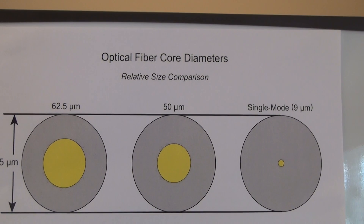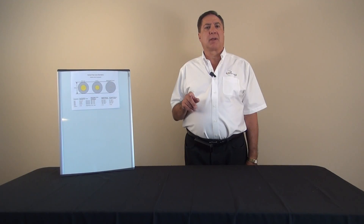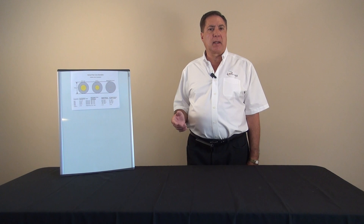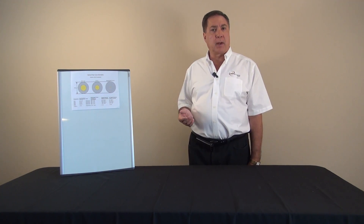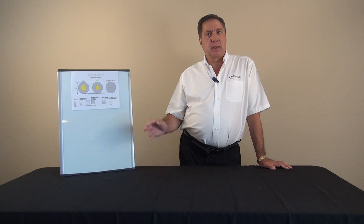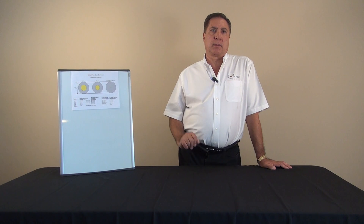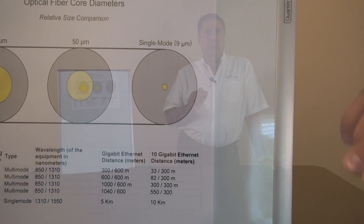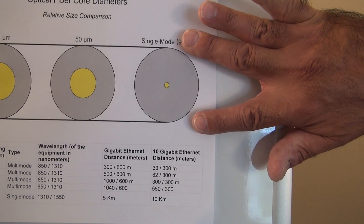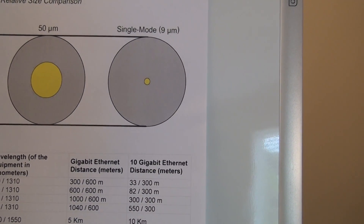The function of the core is to transmit the light, whereas the function of the cladding is to reflect the light, keep it contained within, and propagate the light through the fiber. There are two main types of fiber: multi-mode and single mode. Generally speaking, multi-mode cables are used for local area networks, whereas single mode cable is normally used for much longer distances.